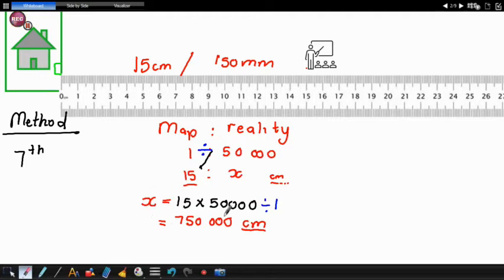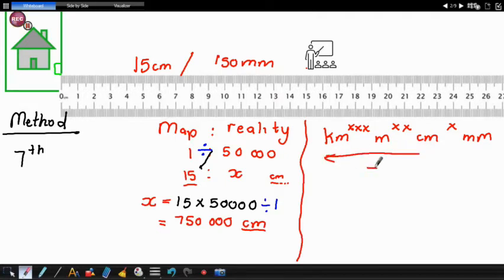Once we are done with this, we then have to convert to kilometers because our actual distance is usually in meters or in kilometers. So we go ahead and we use a method of conversions. We know we'll have kilometers, meters, centimeters, and millimeters. We'll have three stars for 1000, two stars for 100, and one star for 10. So if I'm going now from centimeters to kilometers, it means I'm going to divide. But if I was moving forward, I was going to multiply. When you're moving forward, just like you're reading a sentence, you multiply, and when you're moving backwards, you divide.